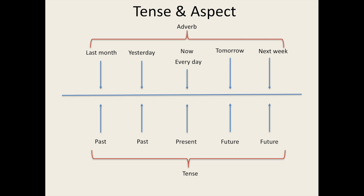There are also compound tenses such as the pluperfect and the future perfect, which describe events which have occurred before other events in the past, and events which will have occurred by a certain time in the future, respectively. An example of the pluperfect is: 'he had already left when she arrived.' And an example of the future perfect is: 'Martin will have prepared the meal by the time the guests arrive.'